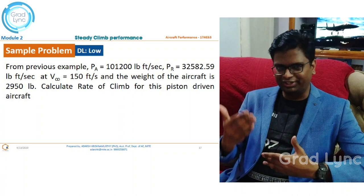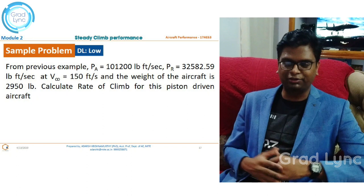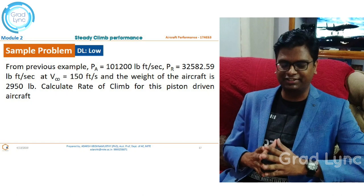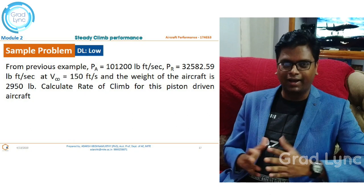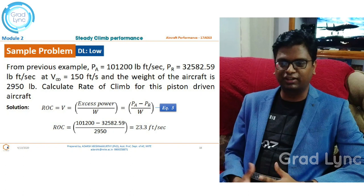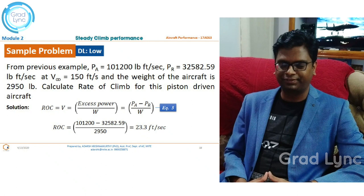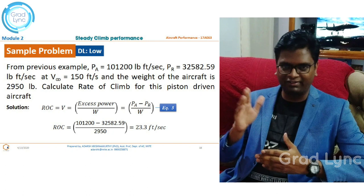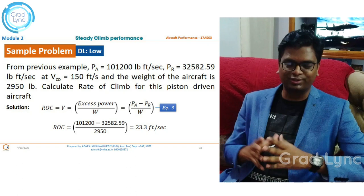I will show the detailed methodology of how to work out these problems using Microsoft Excel. For now, you can pause this video, try this problem, and come up with the rate of climb value. Recalling equation number 5, the rate of climb is the ratio of excess power to the weight of the aircraft. Excess power is the difference between total power available and power required for a piston engine.